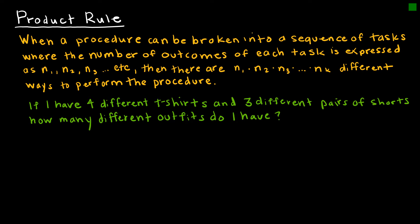The product rule occurs when we have a procedure that can be broken into a sequence of tasks, where the number of outcomes of each task — or ways that you can perform each task — is expressed as N1, N2, N3, etc. Then there are N1 times N2 times N3 times NK different ways to perform the procedure. That's just fancy math talk for saying, if you've got something that can be performed a bunch of different ways, then multiply those ways.